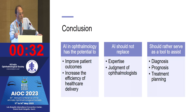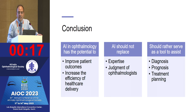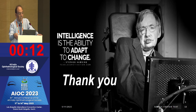Overall, AI in ophthalmology has the potential to improve patient outcomes and increase the efficiency of healthcare delivery. However, AI should not replace the expertise and judgment of ophthalmologists; rather, it should serve as a tool to assist in diagnosis, prognosis, and treatment planning. In the words of Stephen Hawking, 'Intelligence is the ability to adapt to change.' Thank you very much for your patient listening.